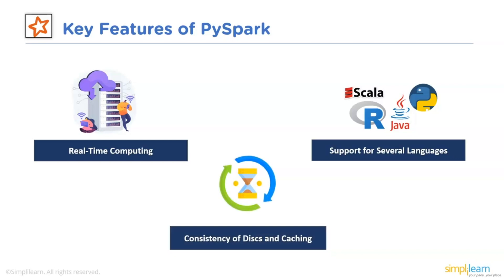The first key feature of PySpark is real-time computing. PySpark focuses on in-memory processing and offers real-time computing on massive amounts of data, so low latency is evident. The next feature is support for several languages. Scala, Java, Python and R are just a few programming languages with which the PySpark framework is compatible. Because of its interoperability, it is the best framework for processing large data sets.